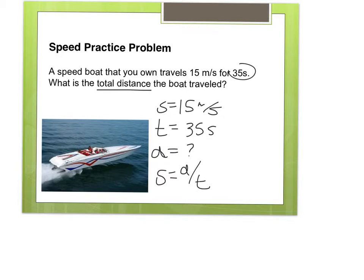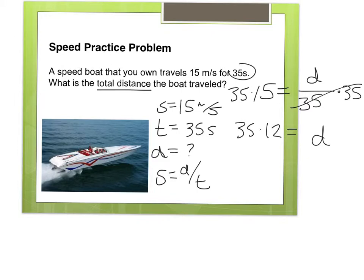We know that the equation for speed is distance divided by time. If I set that up, my speed is 15, my distance I don't know so I leave it as d, and my time is 35 seconds. To solve for that, I'm going to multiply both sides by 35 so that I could get d by itself. 35 times 15 equals 525, which equals the distance. What are my units for distance? They're in meters. So after 35 seconds, this boat went 525 meters.